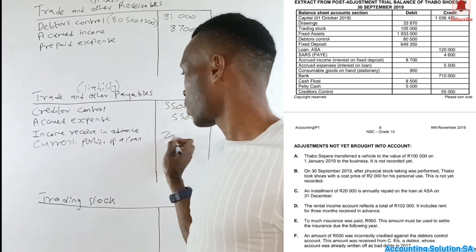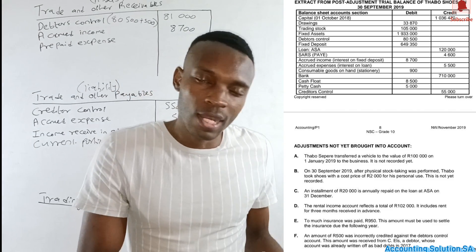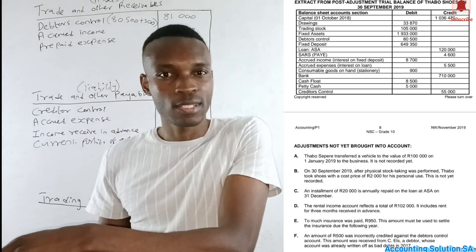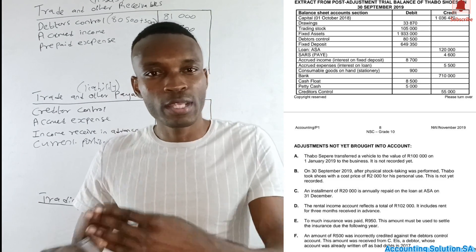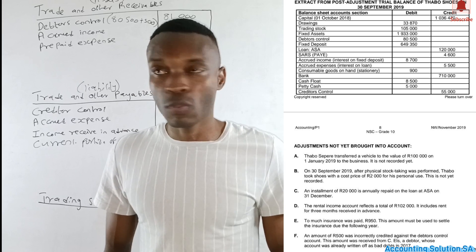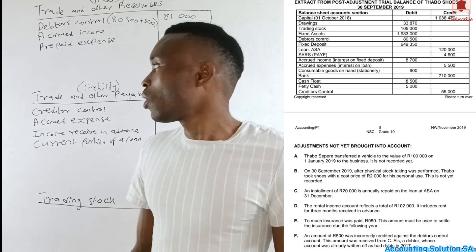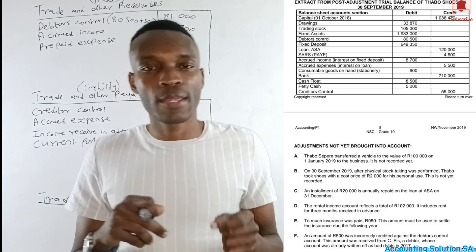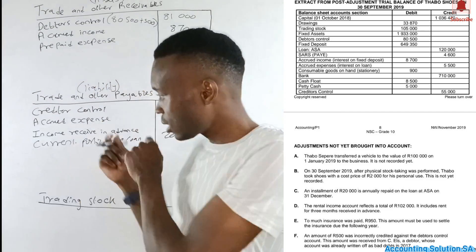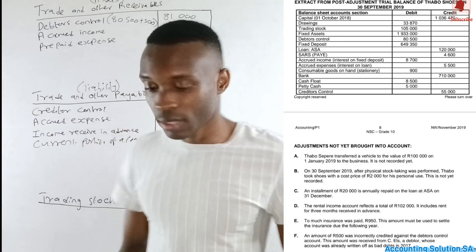Let me explain the current portion of a loan. Non-current liability is an amount payable after 12 months; current liability is payable within 12 months. This installment of 3,000 is due on 31 December, which is less than 12 months away. Therefore we subtract it from the loan under non-current liabilities and add it here as a current portion of the loan — 3,000.